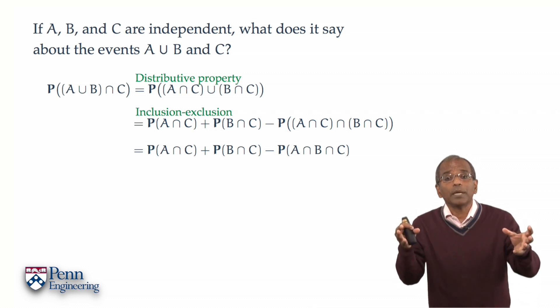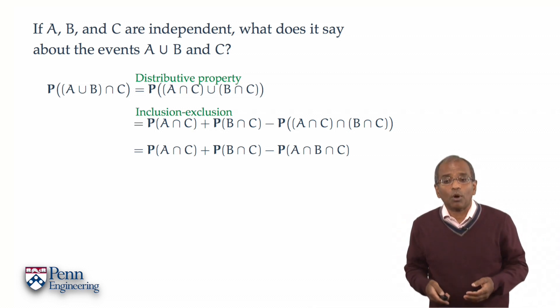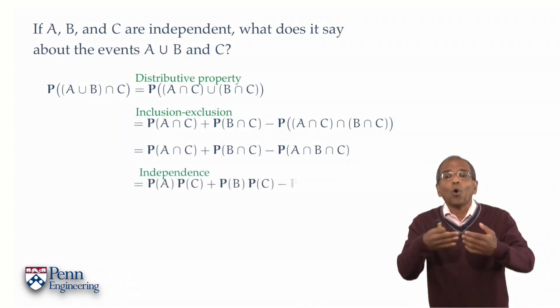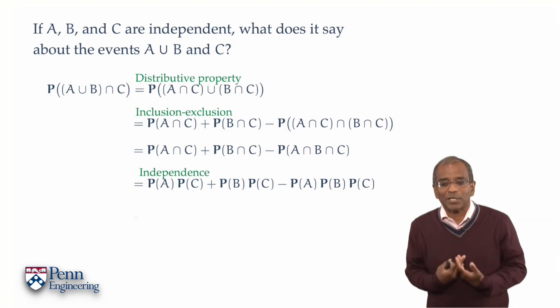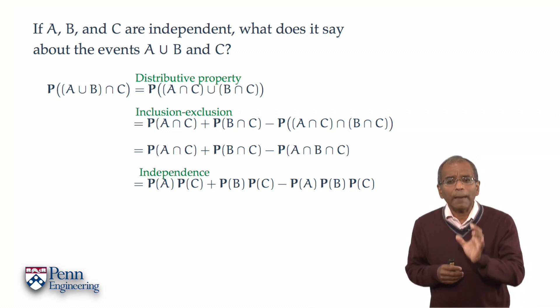On the right, you have expressions involving only intersection probabilities, and because independence gives you product rules for all possible conceivable intersection combinations, we now have a factor. Take a look at this and say, well, okay, various terms are common here. The term, the probability of C, appears in each term on the right.